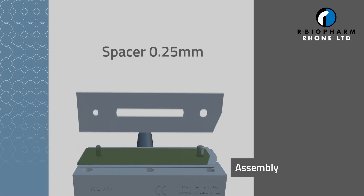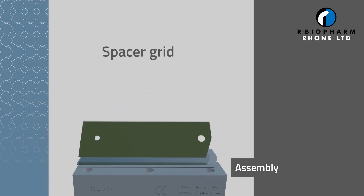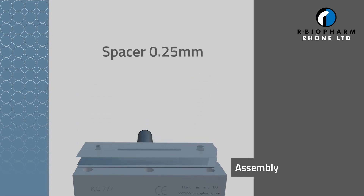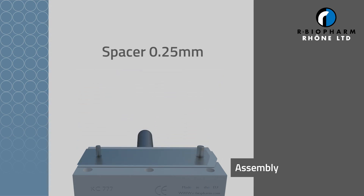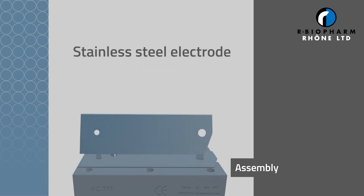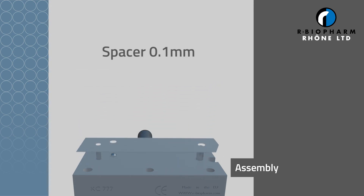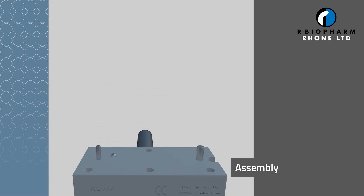The electric current generates the derivatization agent, bromine, online from potassium bromide and nitric acid, which are present in the mobile phase. This results in an increase in the fluorescence signal of the modified aflatoxins.